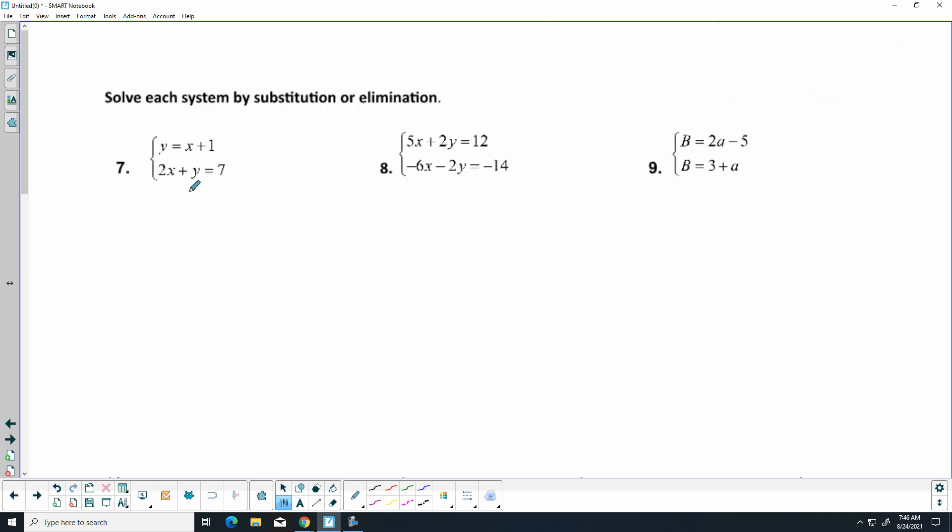All right. Solve by substitution or elimination. Well, I'm thinking substitution for the first one. So, I'm going to get 2x plus x plus 1 equals 7. 3x plus 1 equals 7. Subtract 1. x is going to be 2. Plug that back in right there. And, I'm going to just do that in my head. Y is 3. So, my final answer is 2, 3.